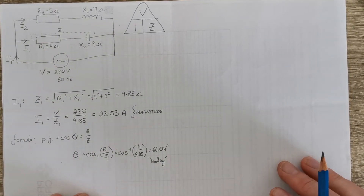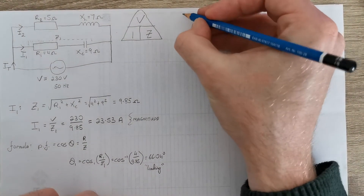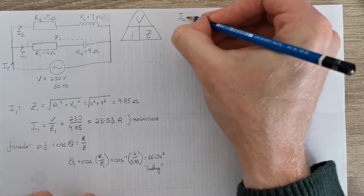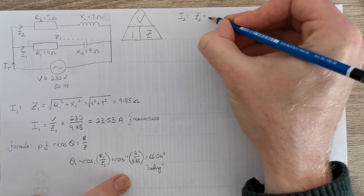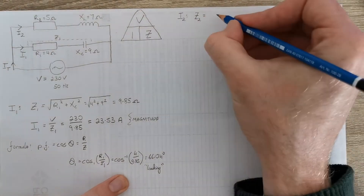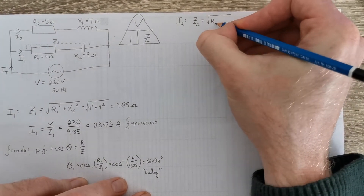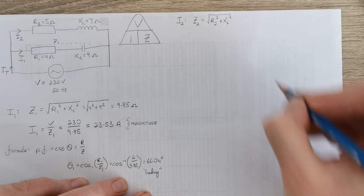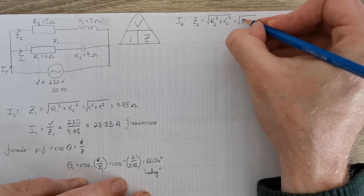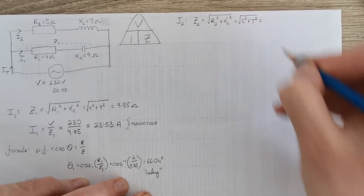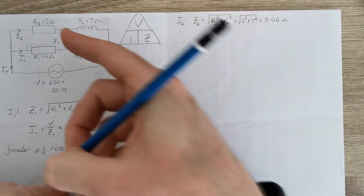So that's the phase and magnitude of our first branch. We now repeat that process to get the values for I2. Calculate the impedance of that branch: Z2 equals the square root of R2 squared plus XL squared, so the square root of 5 squared plus 7 squared, which gives 8.06 ohms for branch 2.